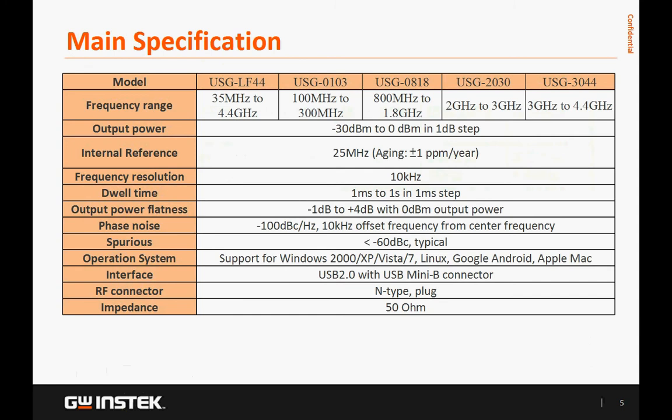The USG Series RF Signal Generator with frequency bandwidth limitation provides lower harmonic output performance. The USG Series features spectral purity of 107 dBc/Hz, dwell time of 1 µs, frequency offset setting of plus/minus 50 kHz, and frequency resolution of 10 kHz.